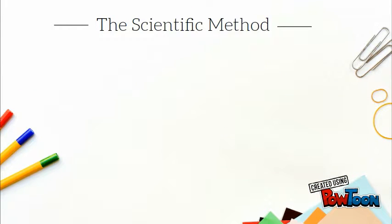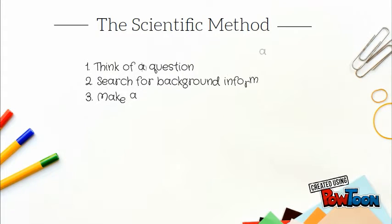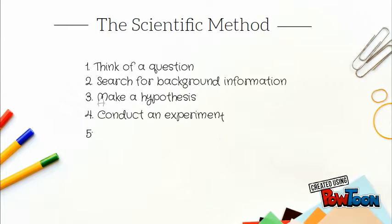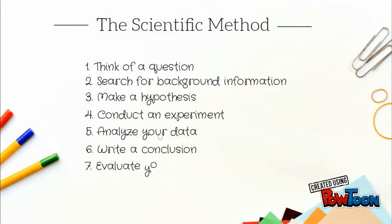These are the steps to the scientific method. Number one, think of a question. Number two, search for background information. Number three, make a hypothesis. Number four, conduct an experiment. Number five, analyze your data. Number six, write conclusion. Number seven, evaluate your data.